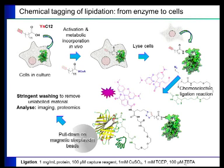We can feed it into cells, where it gets activated and incorporated metabolically inside live cells — converted into a thioester, which is the active substrate for the enzyme N-myristyl transferase. Once that's been incorporated for a certain period of time, we can lyse the cells, recover the proteins that have picked up this alkyne, and the theory is that the alkyne chemical tag will only end up on proteins that would otherwise be modified by NMT.